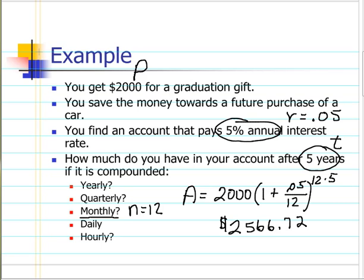If we wanted to redo this problem with, say, quarterly, then 12 would be replaced with 4, because there's 4 quarters per year, and 12 here would be 4. If we were doing daily, this would become 365, and this would be 365.